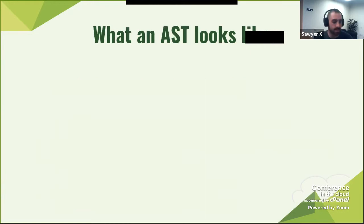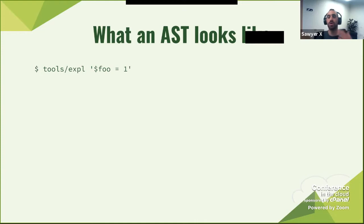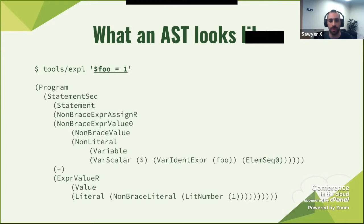What does an AST look like? We have a tool that provides an explanation: we give it a string and it gives us the AST back. The AST that we have provides a lot of data — we're going to clean it up, but this is what you get at the moment. If you give it '$foo = 1', you get this entire structure. There's quite a bit here.